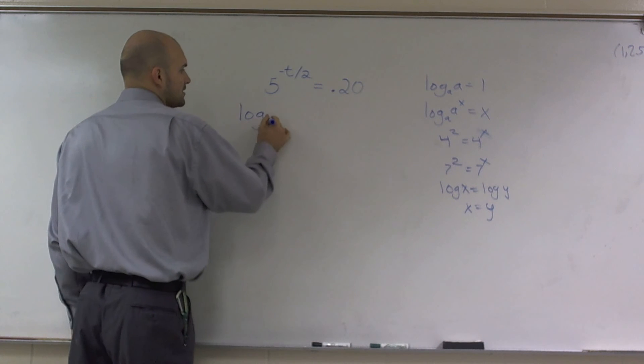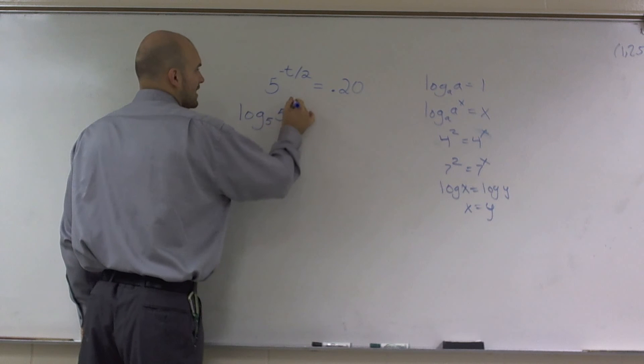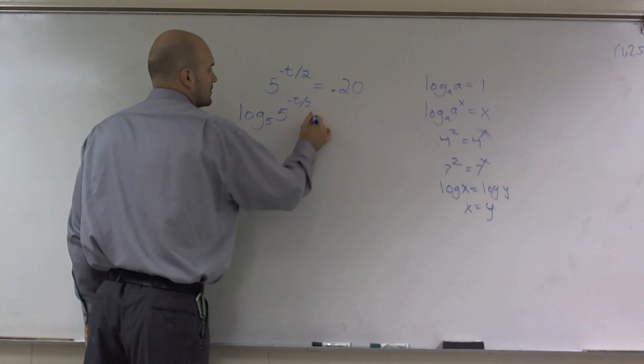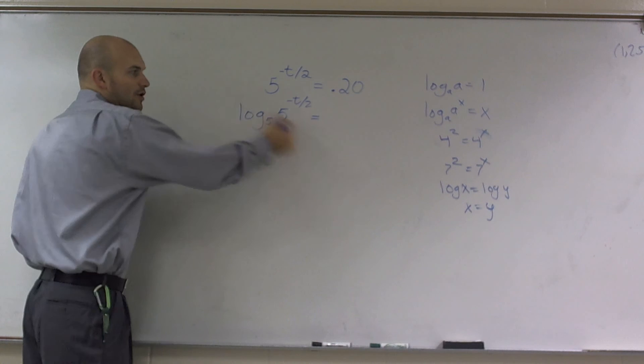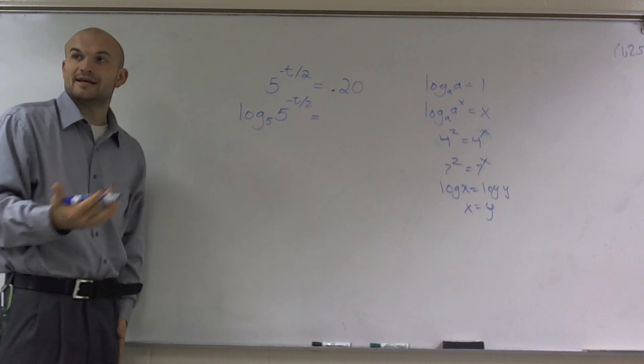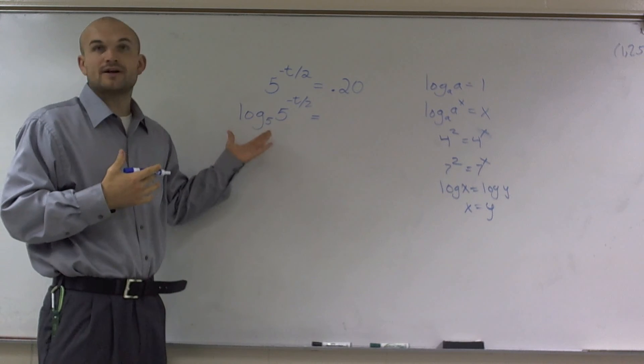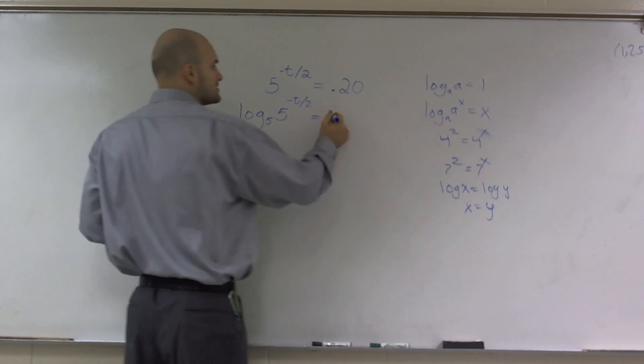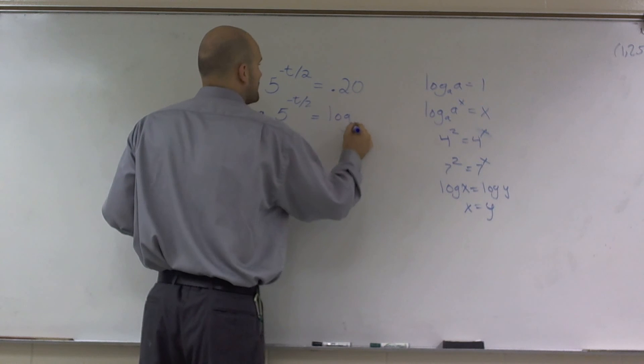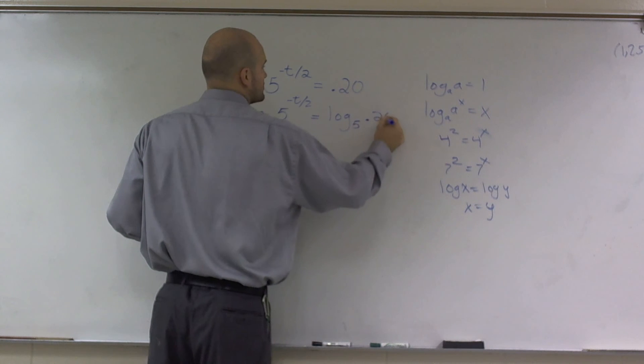Because then I know I can cancel that out. So I'm going to manipulate this equation. But remember, whatever I do on the left side, I have to make sure I do on the right side. So I have log base 5 of 0.20.